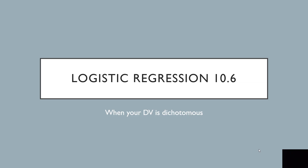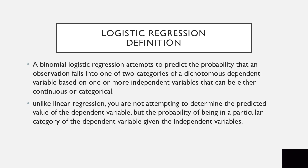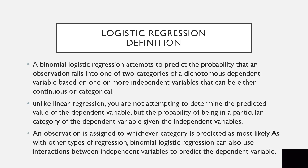Logistic regression, covered in chapter 10.6, is used when your dependent variable is dichotomous. A binomial logistic regression attempts to predict the probability that an observation falls into one of two categories of a dichotomous dependent variable, based on one or more independent variables that can be either continuous or categorical. Unlike linear regression, you are not attempting to determine the predicted value of the dependent variable, but the probability of being in a particular category of the dependent variable given the independent variables.